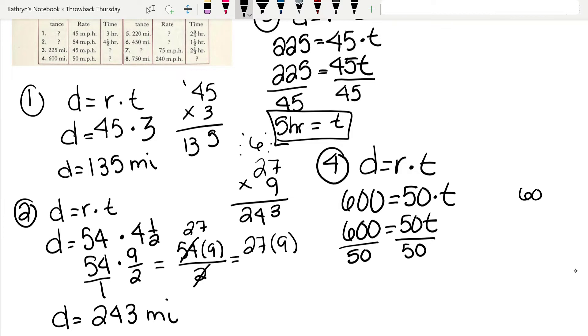600 divided by 50. Well, 50 goes into 60 once. 1, 0, bring down the 0. There are two 50s in 100. So the time is going to equal 12 hours.